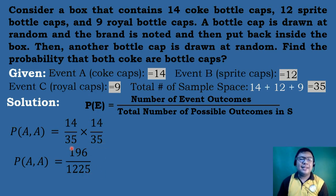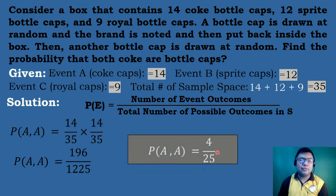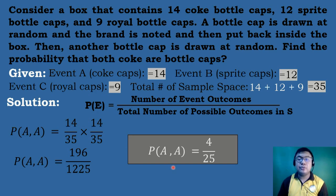Multiplying these: 14 times 14 equals 196, and 35 times 35 equals 1,225. Getting the lowest term, both are divisible by 49. So 196 divided by 49 equals 4, and 1,225 divided by 49 equals 25. Therefore, the probability of getting a Coke bottle cup on both the first and second draw is equal to 4 over 25.